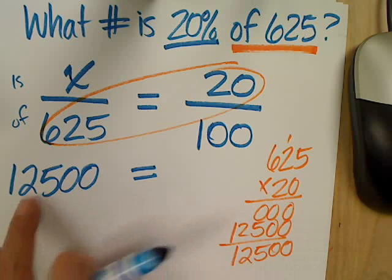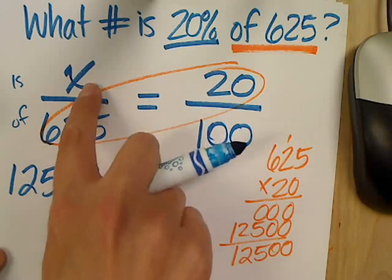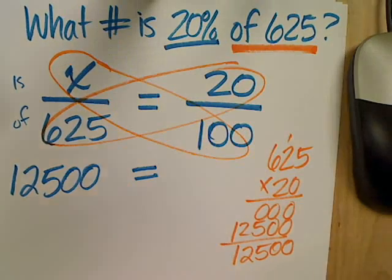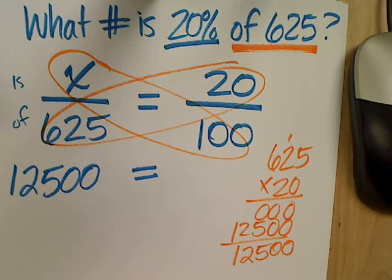So, now I've multiplied these two numbers. I still have to multiply X times 100. What's 100 times X? 100X.